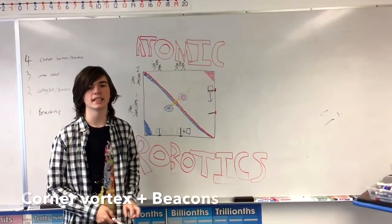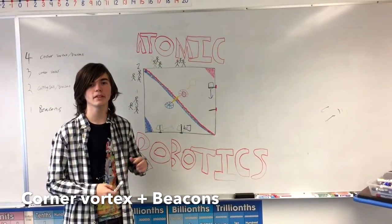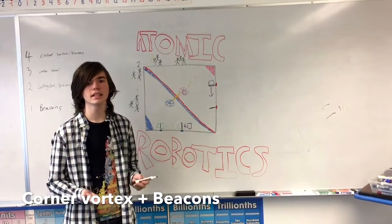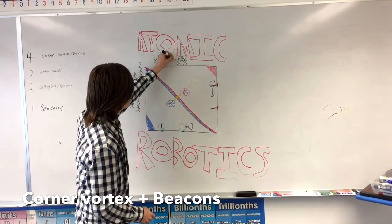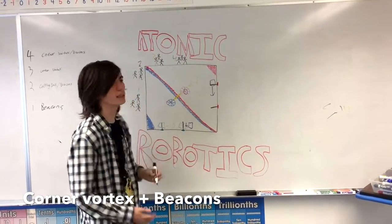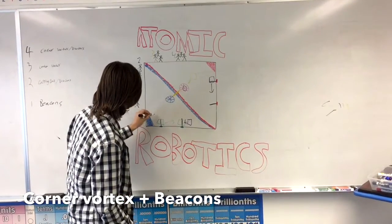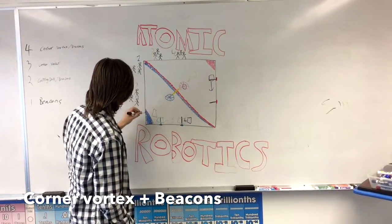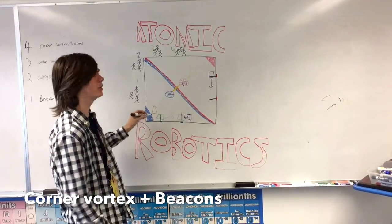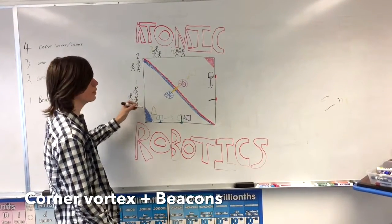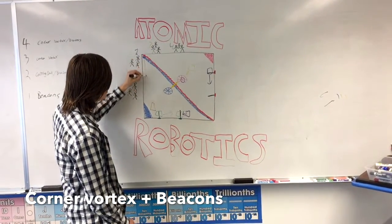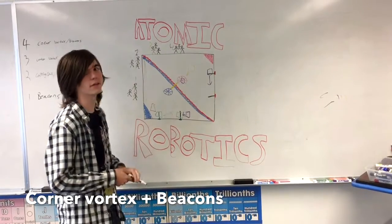The last strategy I'll be discussing is a robot that primarily scores in the corner vortex and contests the beacons as well. So this could go one of two ways. Our group up here, number four, is going to either focus a lot more on scoring in the corner vortex - so over here, or on the red side as well - scoring particles into the corner vortex. The problem that we've found with this is that when you score a particle into the corner vortex, it shoots all the way out and goes into the opposite corner of where you scored.